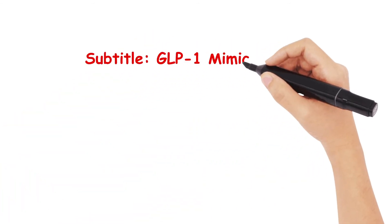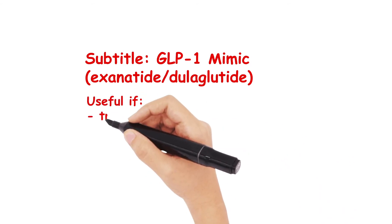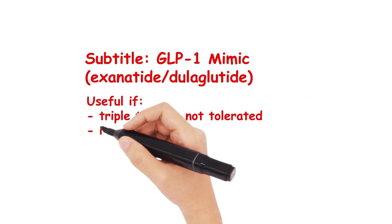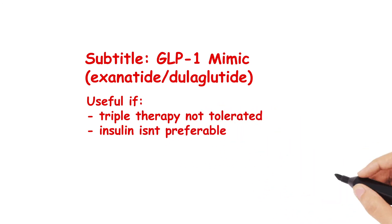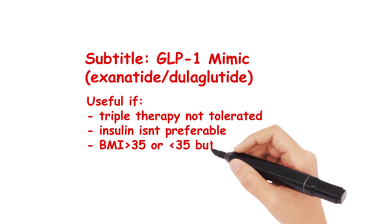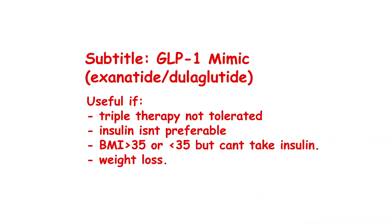There is, however, another medication — a GLP-1 mimic, or glucagon-like peptide-1 mimic — that could also be used, particularly if triple therapy isn't effective or if insulin really isn't preferable. This is most useful for patients with a BMI above 35 with psychological or physical problems secondary to obesity, or those with a BMI less than 35 who are not able to take insulin. It is ideal in aiding weight loss.